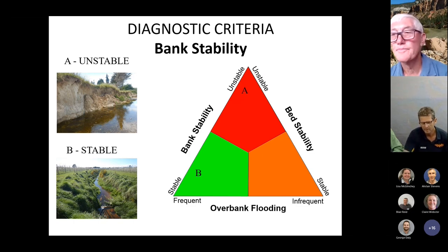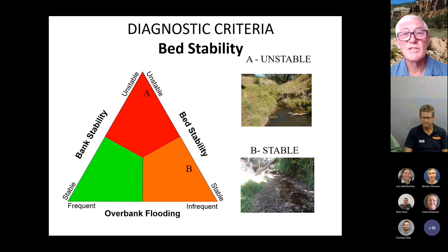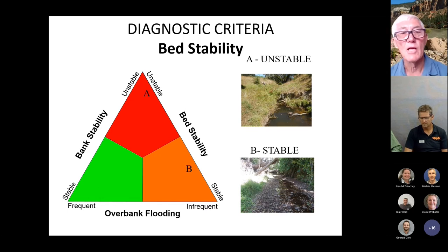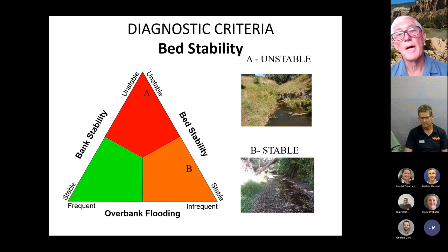For bed stability: the top photograph shows a head cut — a vertical discontinuity in the bed of the stream that is migrating upstream over time, plotting in the unstable field. The lower photograph shows a stable but fairly big stream with a lot of energy, where the banks may not be as stable as desired. We have to think about this in three dimensions — you can't think of overbank flooding, bank stability, and bed stability independently.